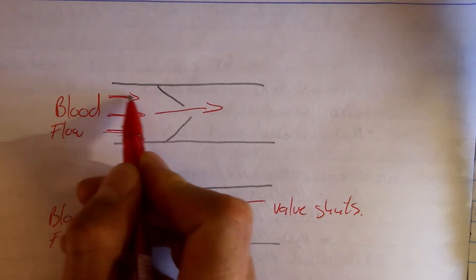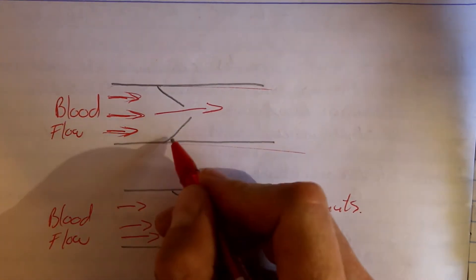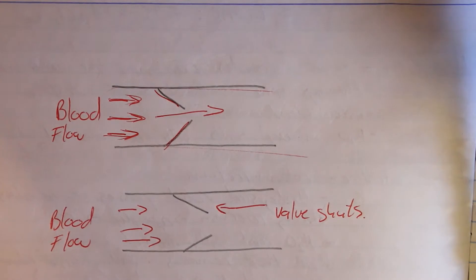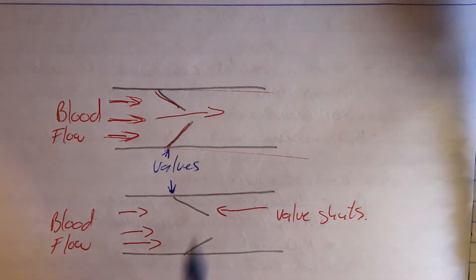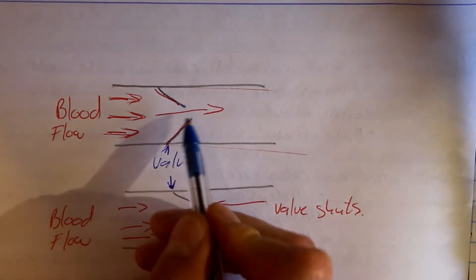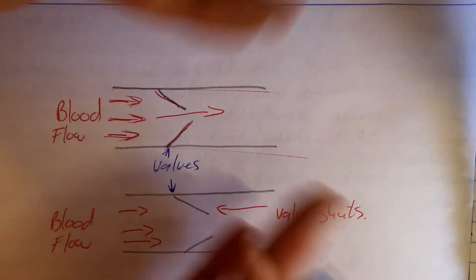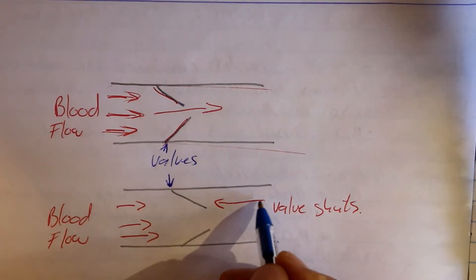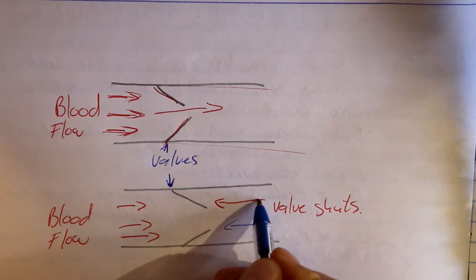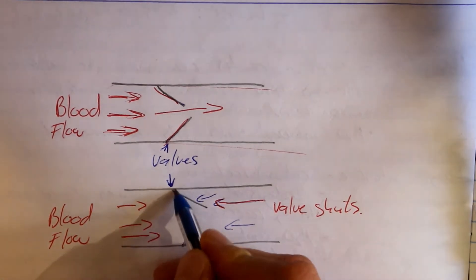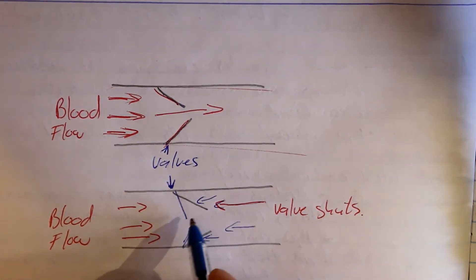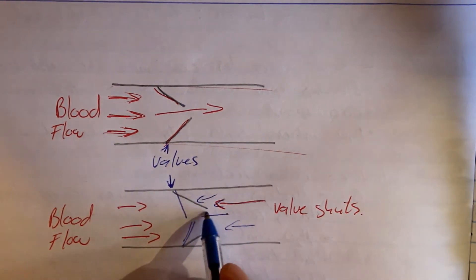Valves control the flow. Blood normally flows in this direction — this is our blood vessel and over here we can see the valves. These are our valve leaflets and they allow the blood to go through because they fold open this way. If blood tries to flow in the wrong direction, the blood will push up against these valves, causing them to close and shut, not allowing blood to flow in that direction.